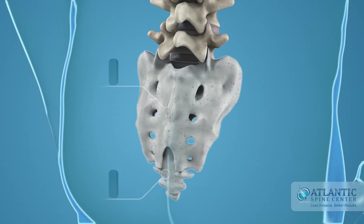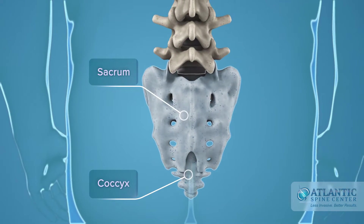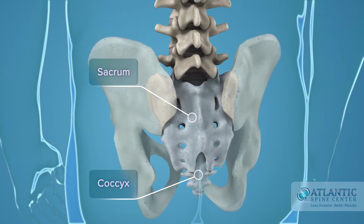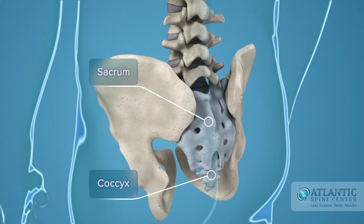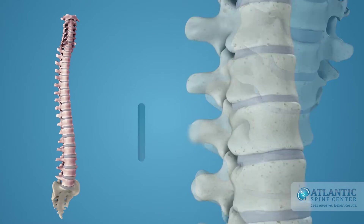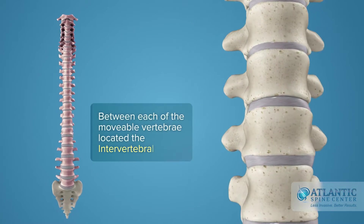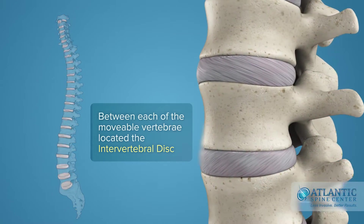Five vertebrae of the sacrum and four of the coccyx are fused, making up the back wall of your pelvis. Between each of the movable vertebrae is located the intervertebral disc.